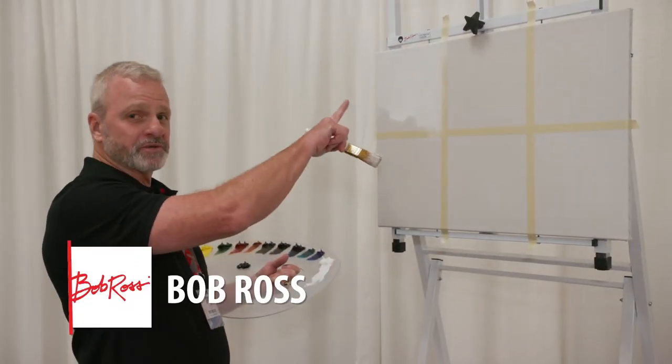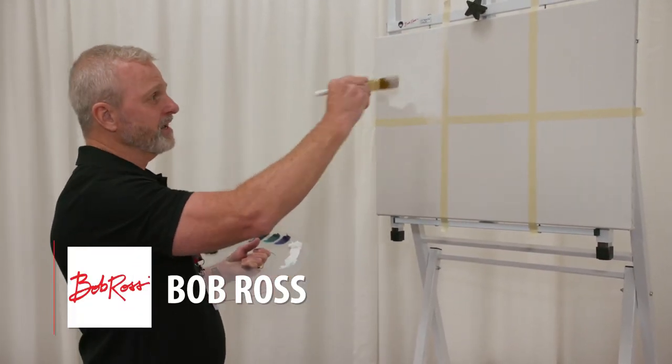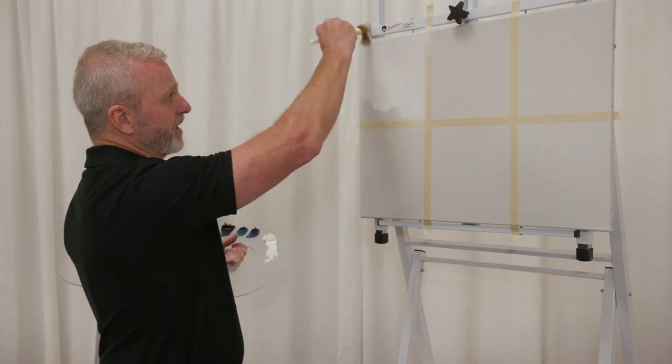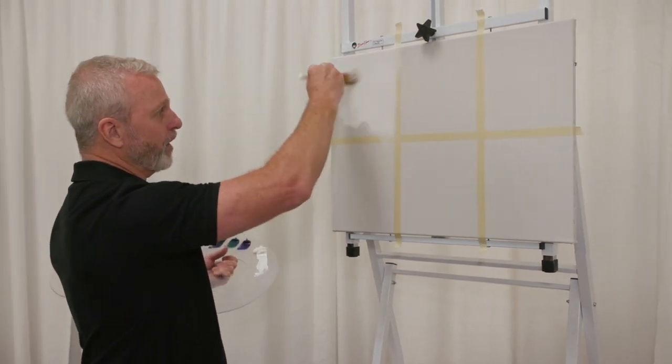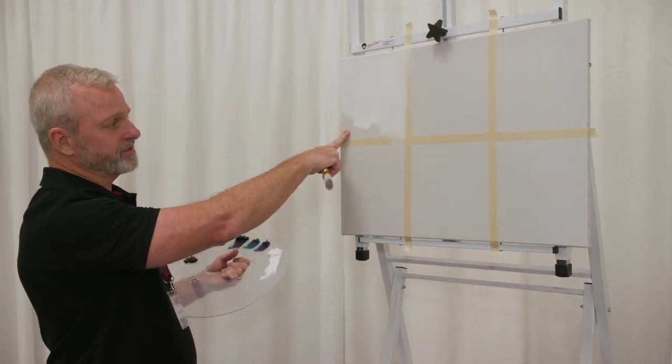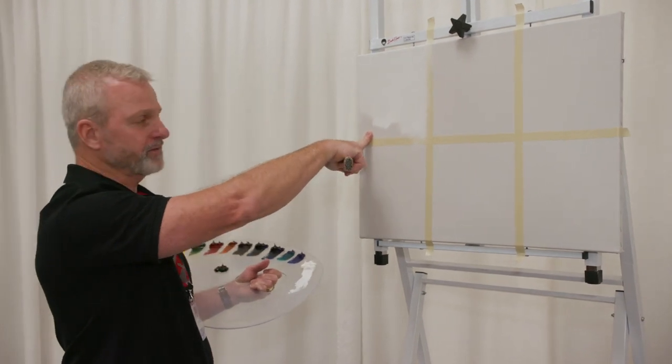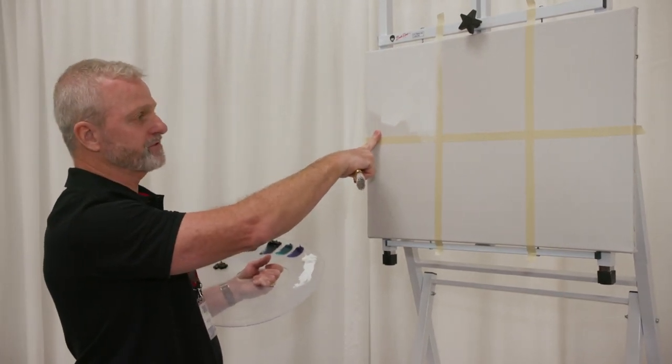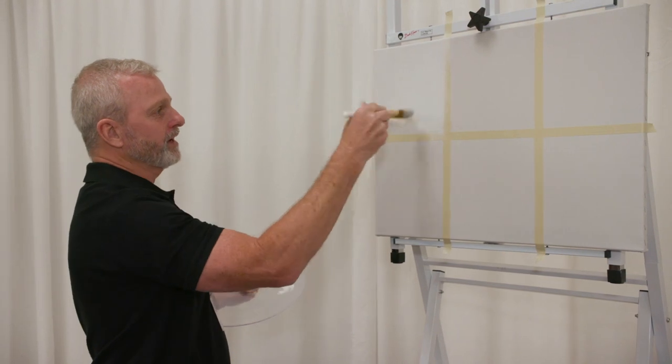I'm Doug with the Bob Ross Company, and I'll be showing you the Bob Ross wet-on-wet technique today. If you can see here on the canvas, I've got a coat of liquid white oil paint, and you'll notice that you can see that because the canvas is slightly gray. The Bob Ross canvases are tinted gray in the gesso process to show that.